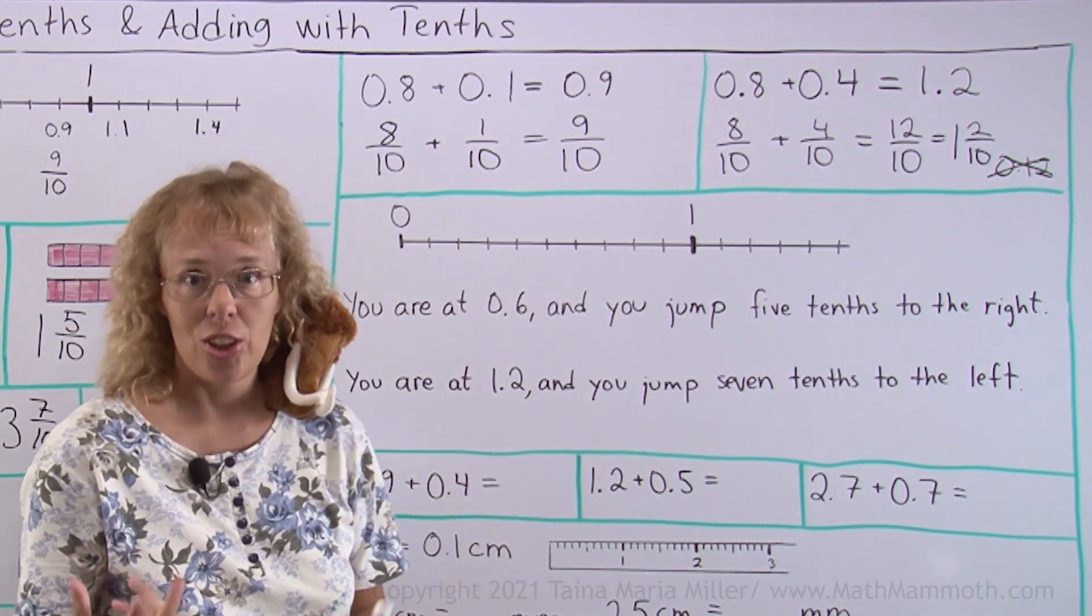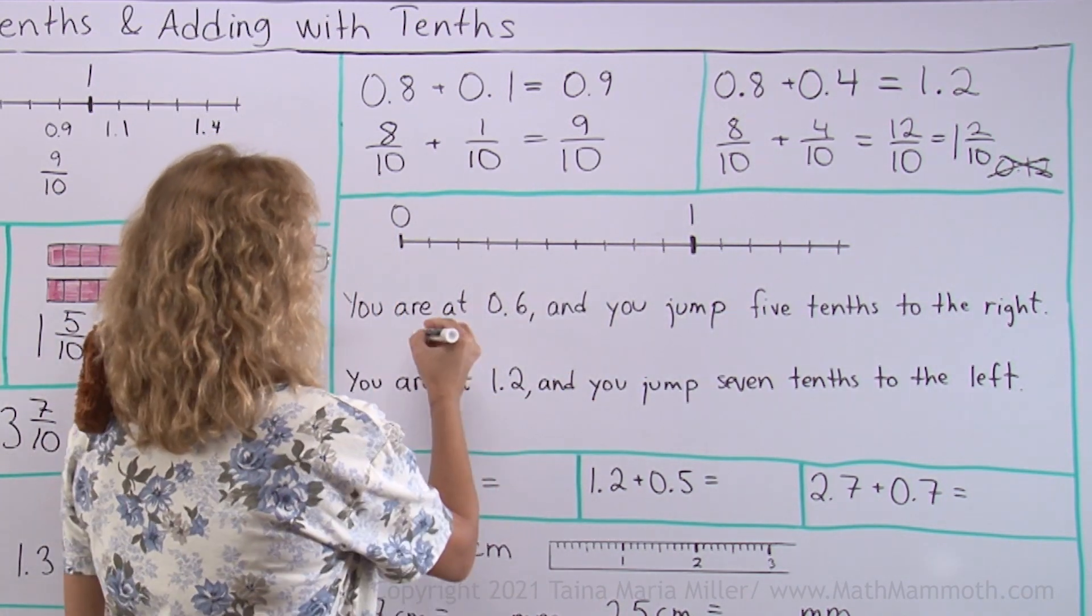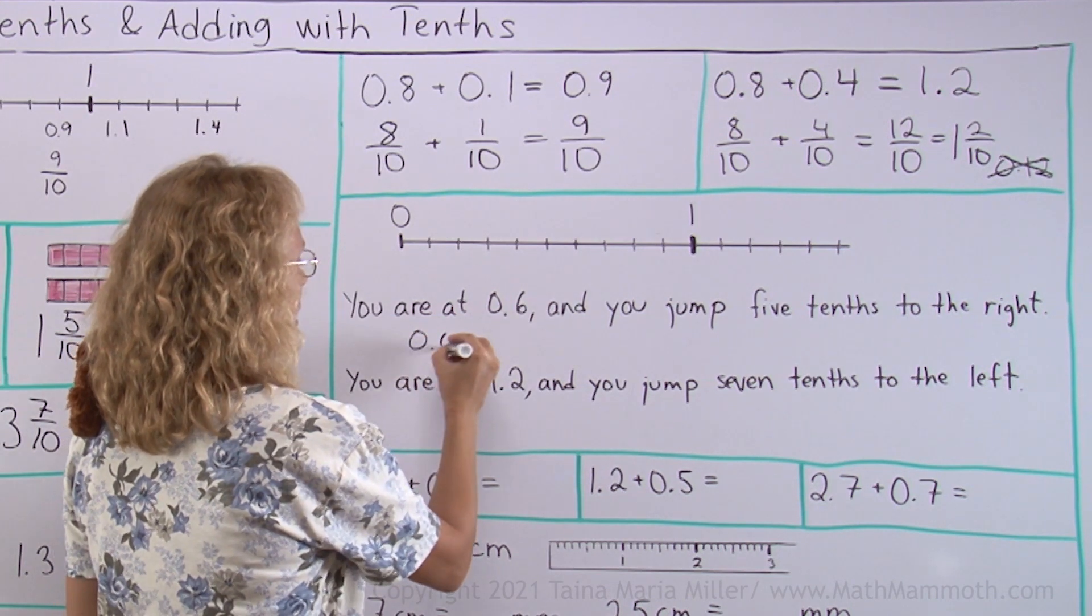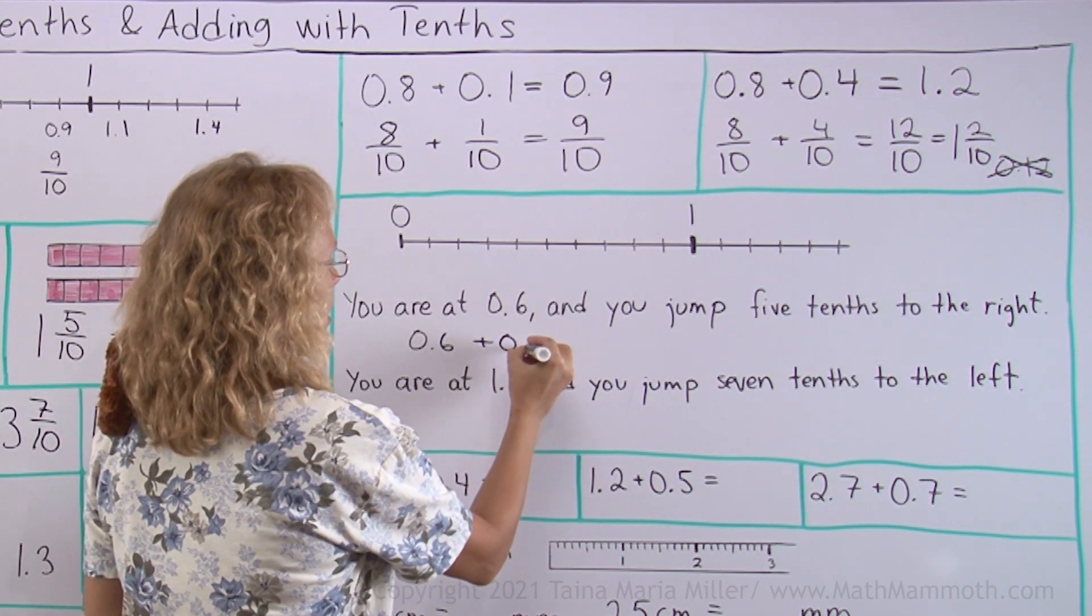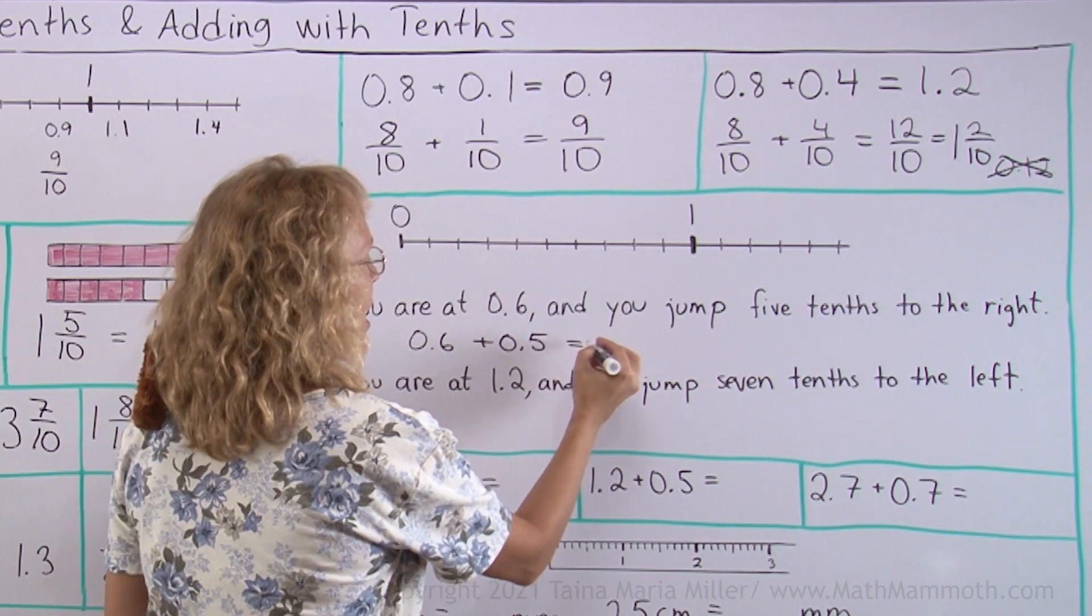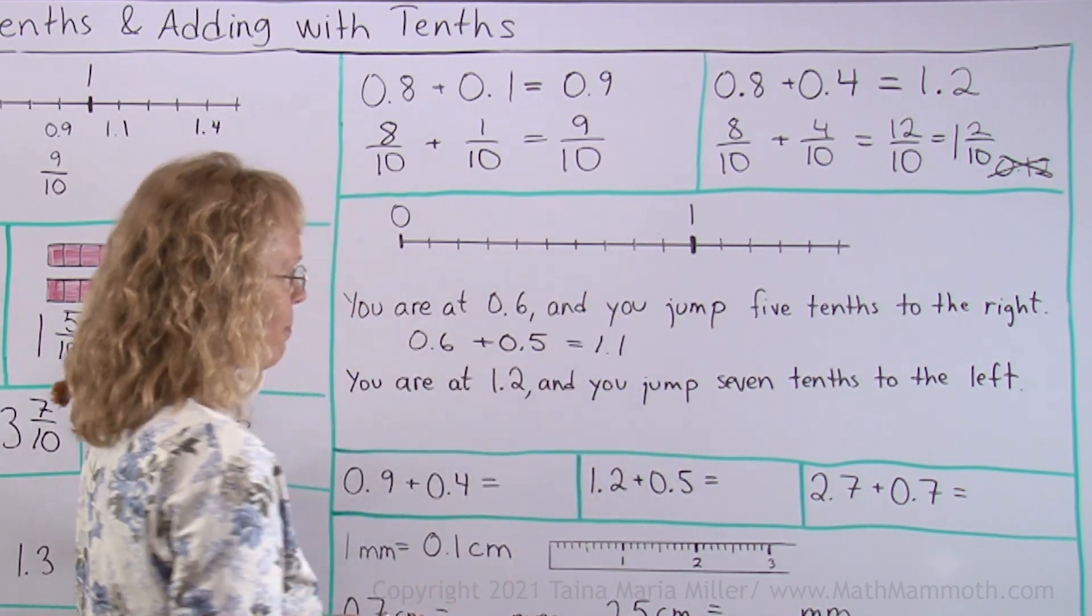I end up at 1 and 1 tenth. And we can write an addition out of this jumping. You start at 0.6. And then you add 5 tenths. Then you end up at 1 and 1 tenth. There.